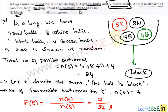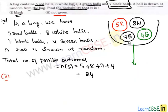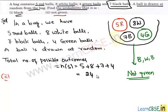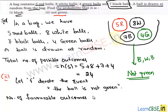Let's move to the next part — the probability that the ball drawn is not green. We can find this solution in two ways. The drawn ball may be black, or it may be red, or it may be white. So we take F as the event that the drawn ball is not green. The number of favorable outcomes to event F is five red balls, eight white balls, or seven black balls, and their sum is 20. So n(F) is 20.